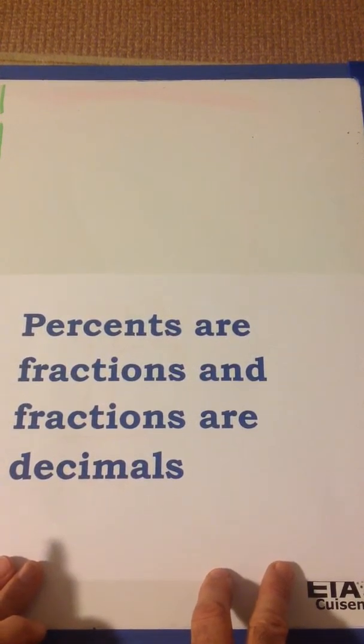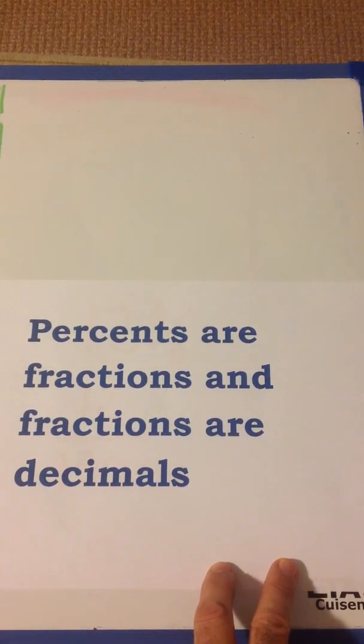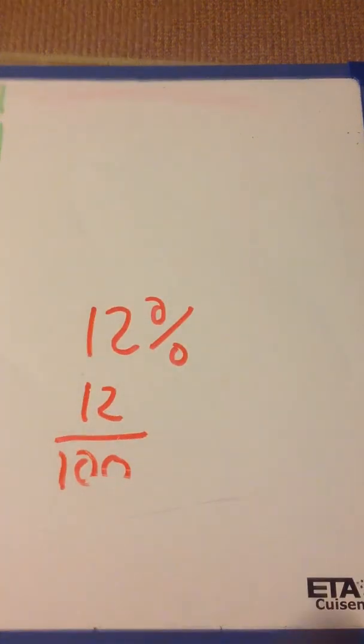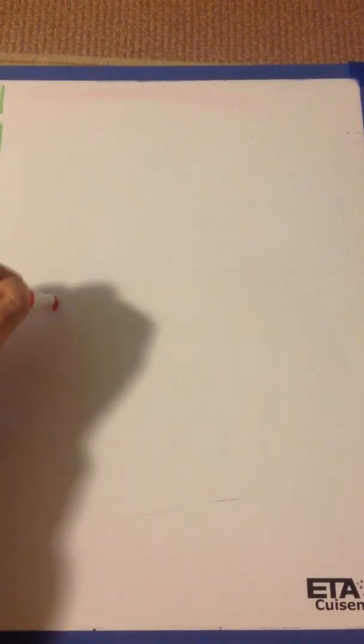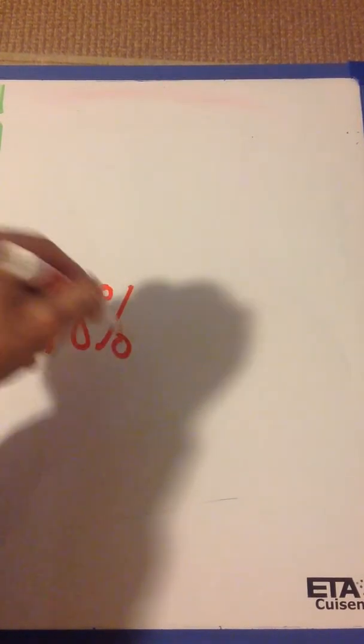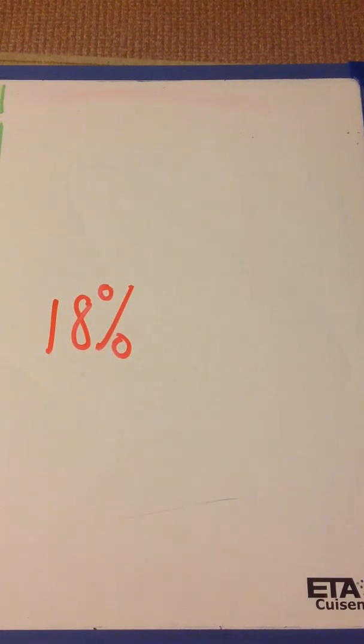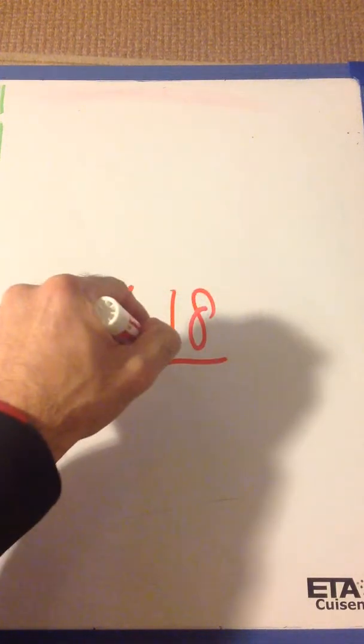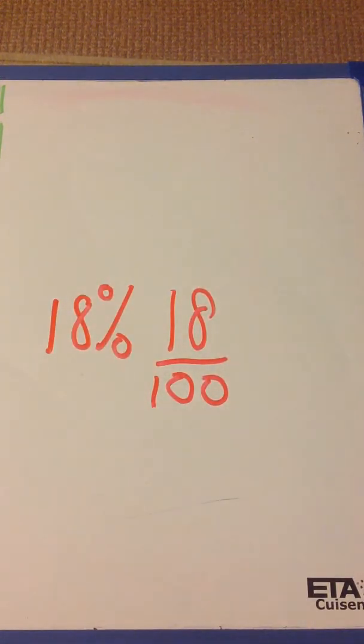So again, percents are fractions. And fractions are decimals. So if I had 18%, I know with the percent sign, that's 18 over 100. So I made the fraction.